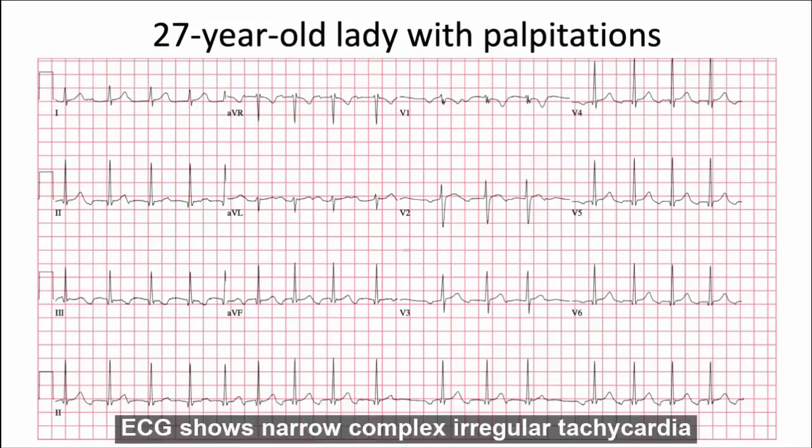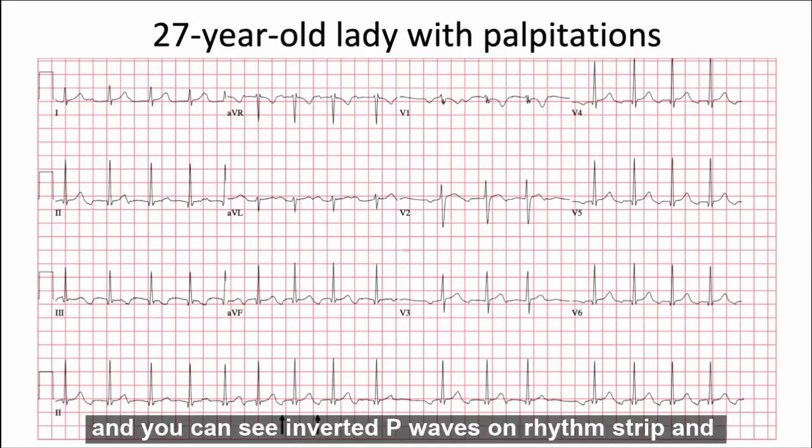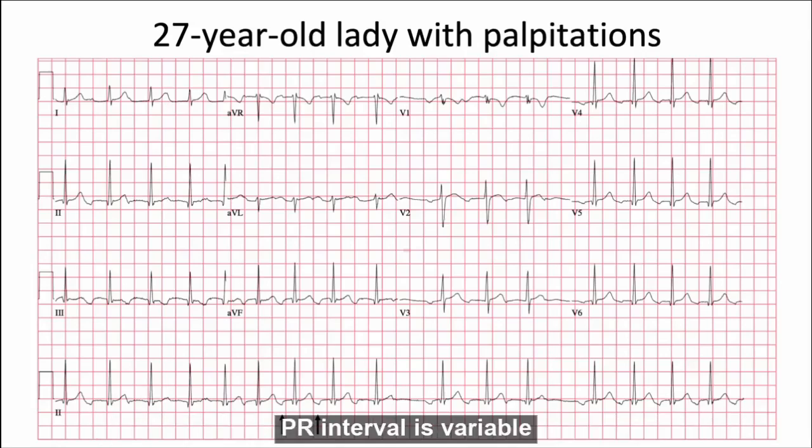The ECG shows narrow complex irregular tachycardia. You can see inverted P waves on the rhythm strip and the PR interval is variable.